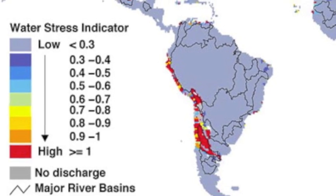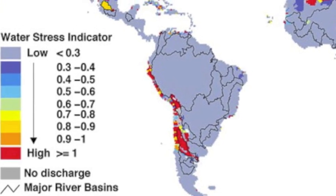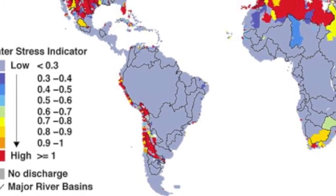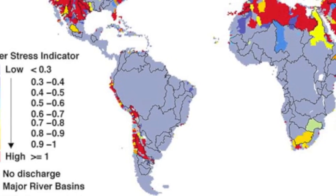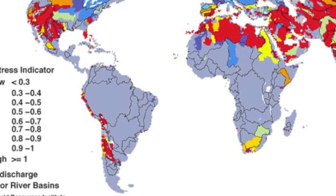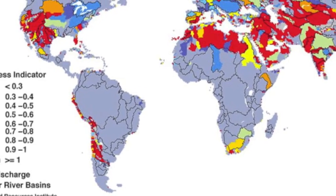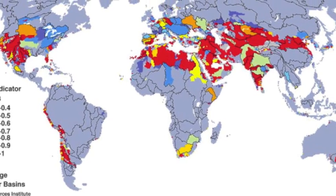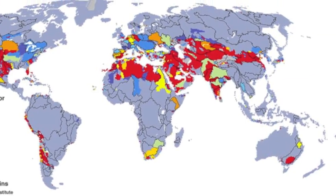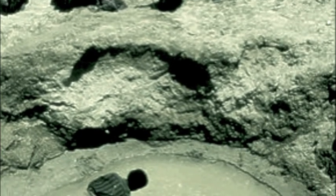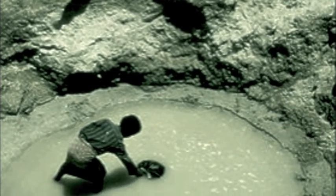Water scarcity started impacting the world in 1999 when 31 countries with a total of 500 million people faced either water stress or water scarcity. Water stress is the stage before water scarcity or potential water scarcity. Some of it happens because there is not enough water in certain places. In the Sahara Desert, the average rainfall per year is only two and a half centimeters.